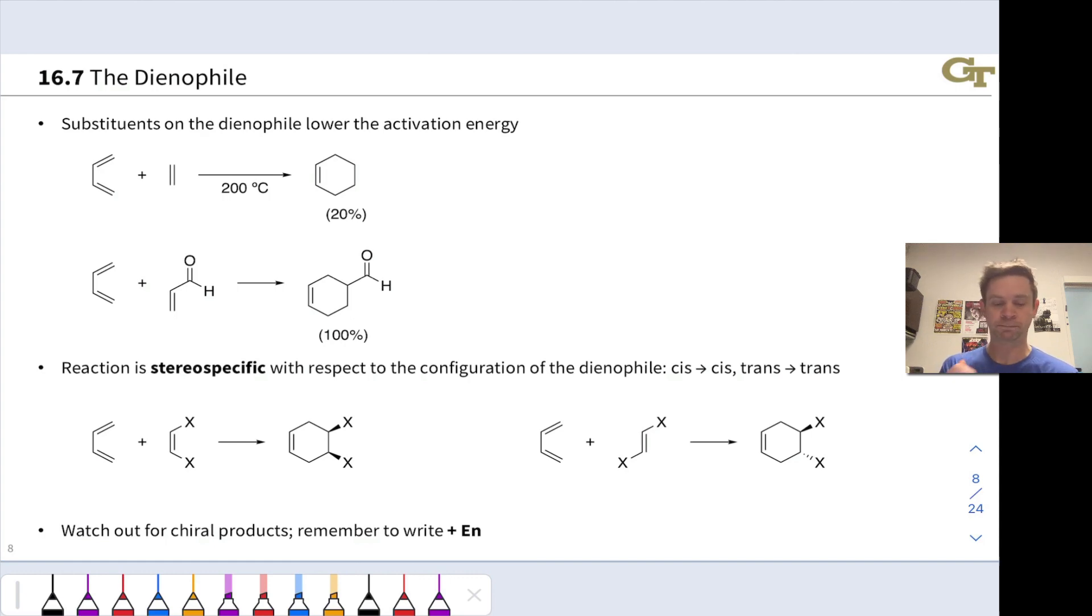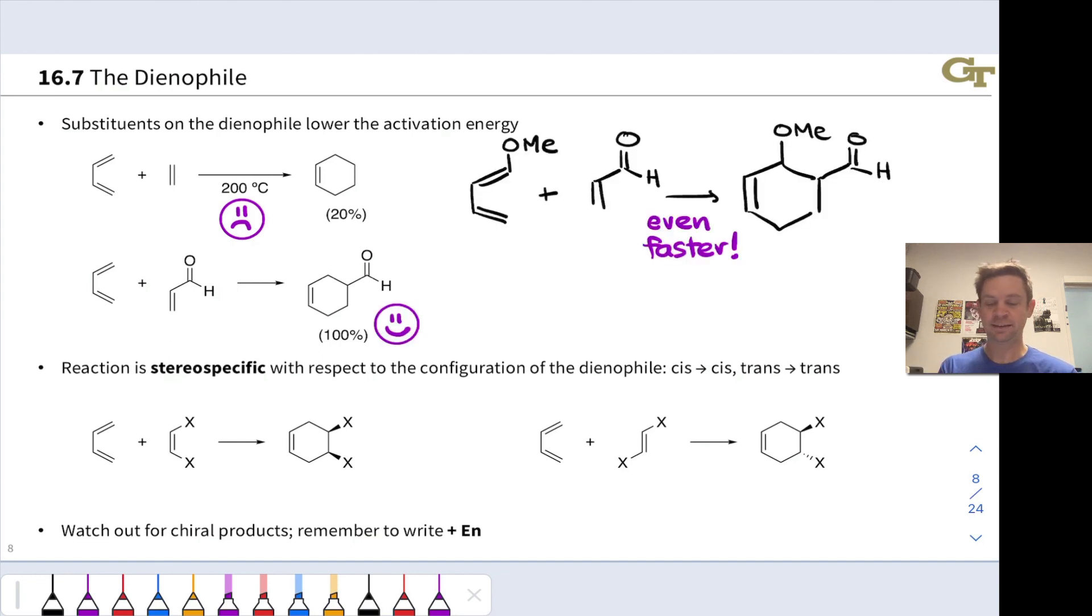Here's a third example that is even faster. If we take that formyl substituted alkene and we take the diene and add a methoxy group to it, this reaction is even faster and will go at room temperature and again give quantitative 100% yield of the cyclohexene product.